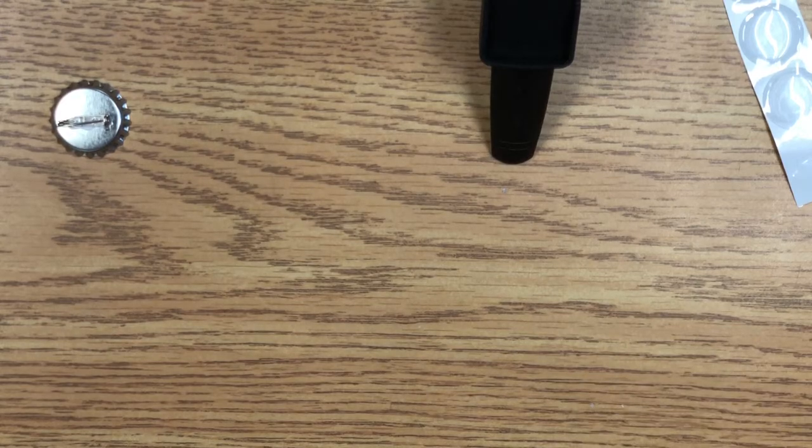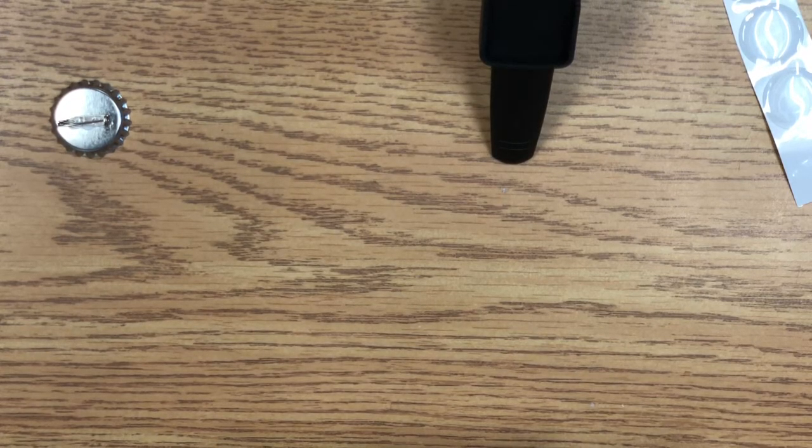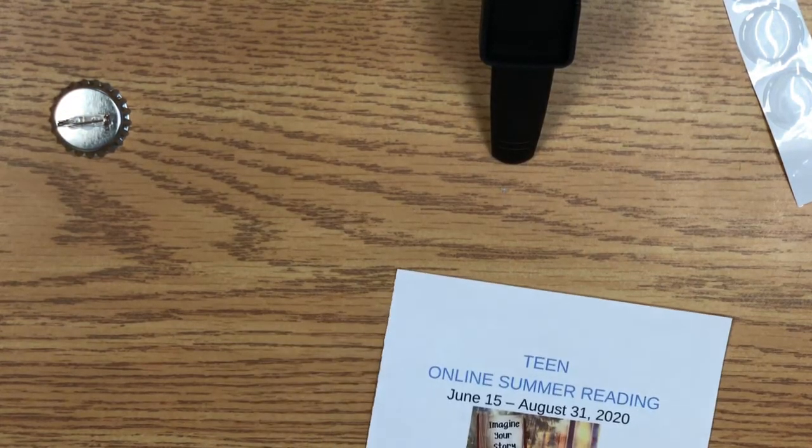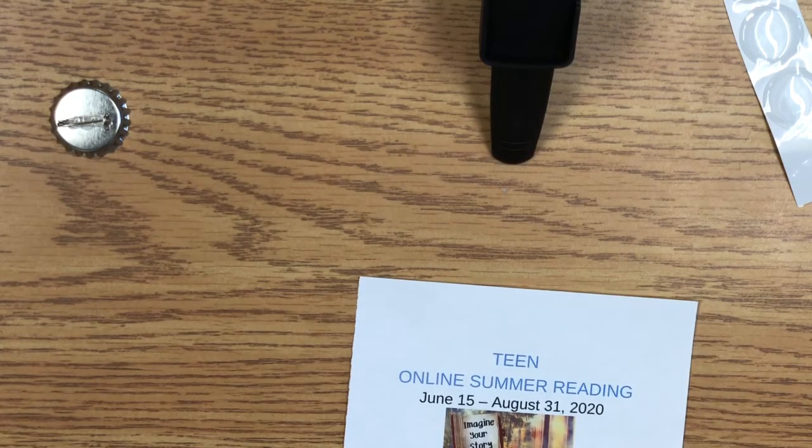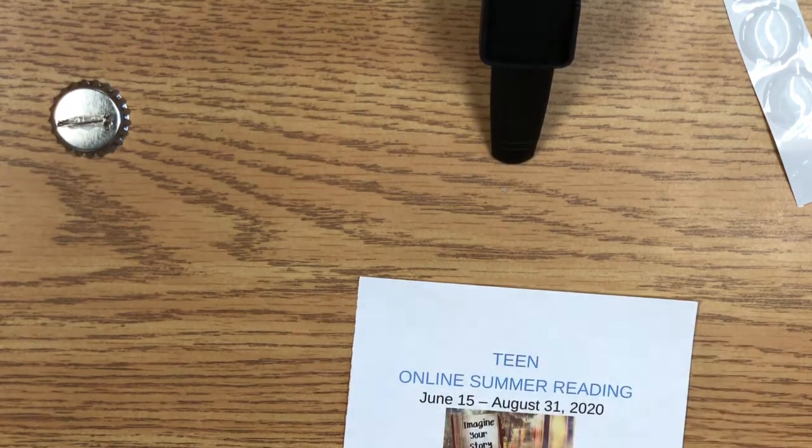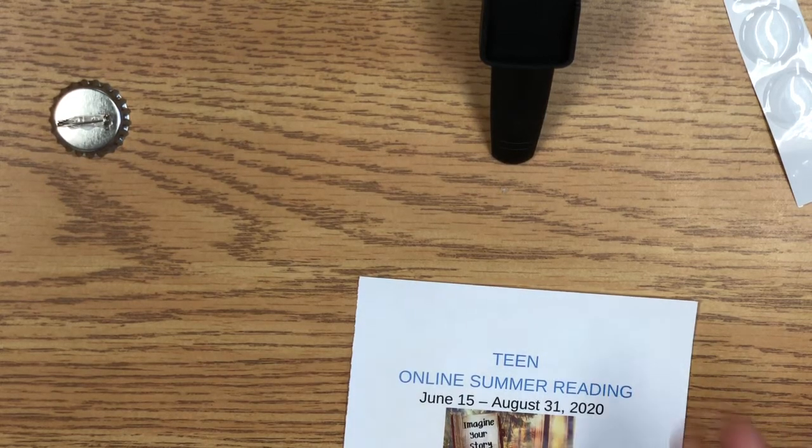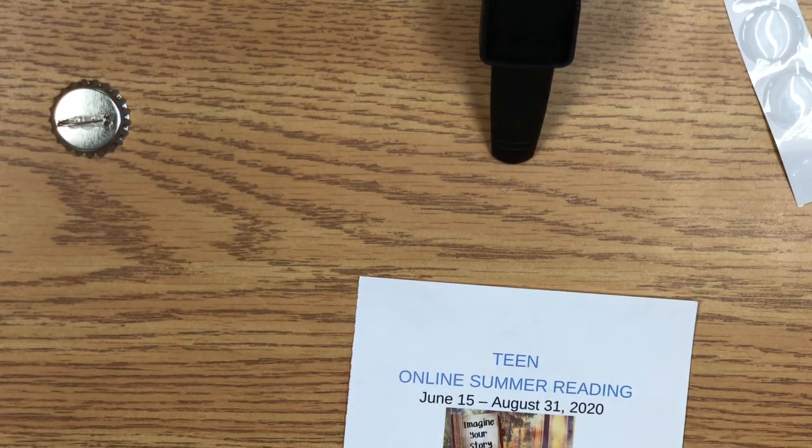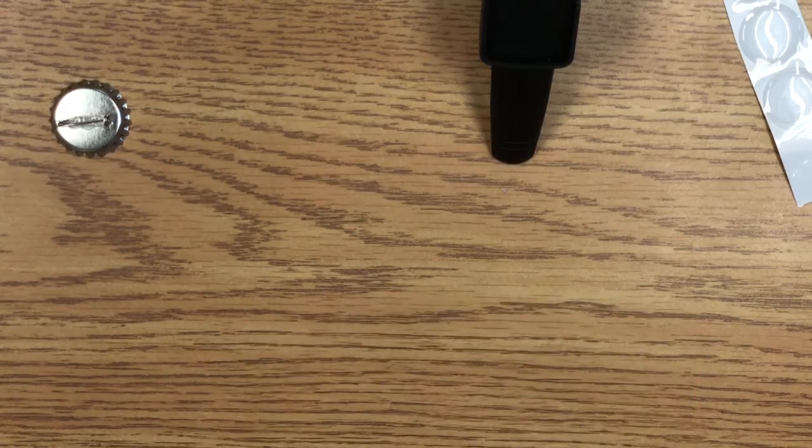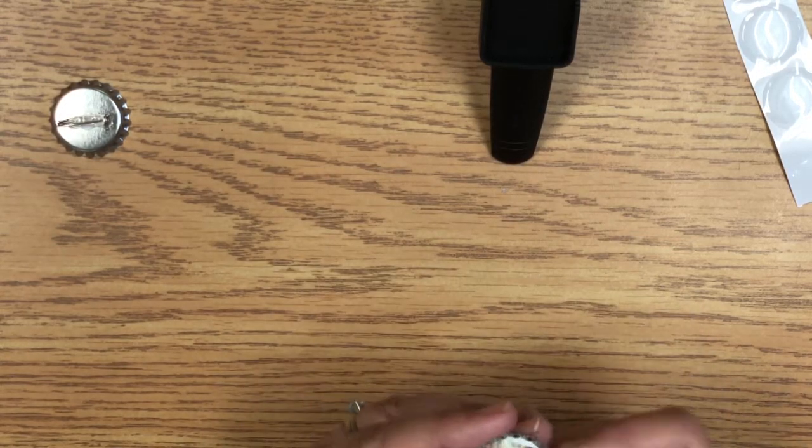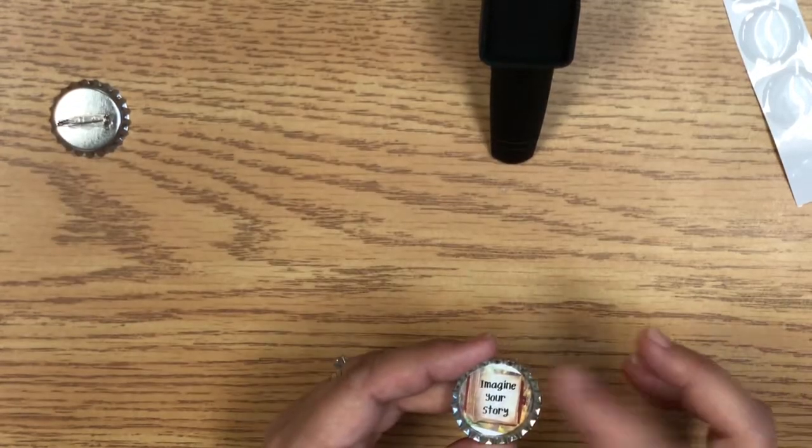So I decided for the other bottle cap I was going to make a magnet and I decided to just make a summer reading magnet using this image for summer reading that says imagine your story. So I actually already did this because you don't need to see me cut it out again. I cut out the circle and I glued it inside the bottle cap.